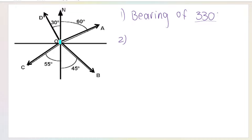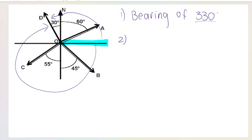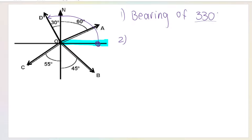Method number two for vector D is relative to the positive x-axis. We could go clockwise or anti-clockwise — you'll get marks either way. I'm going to go anti-clockwise. Starting at the positive x-axis going that way, this part over here is 90 plus 30. So it would be 120 degrees anti-clockwise relative to the positive x-axis.